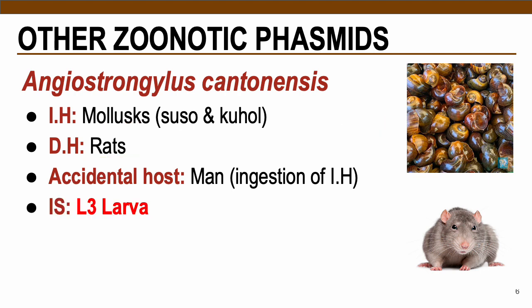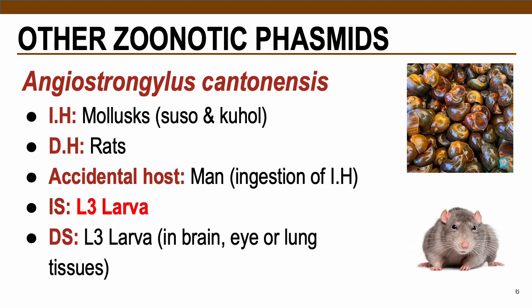The infective stage of this particular parasite is the L3 larva or the third stage larva, and the diagnostic stage is usually found in the brain, eye, or lung tissues of the patient, also as the L3 larva.